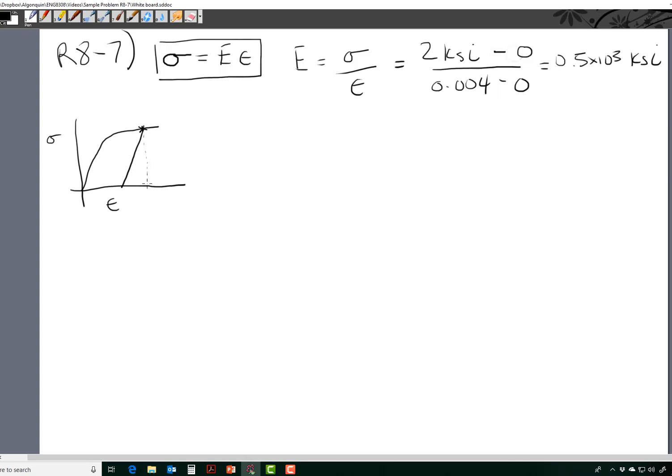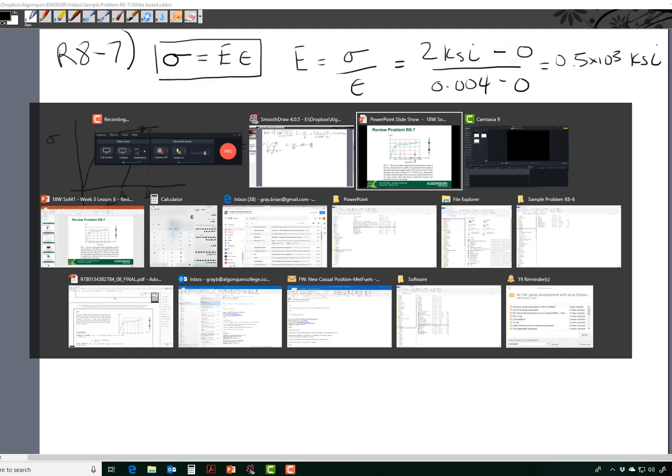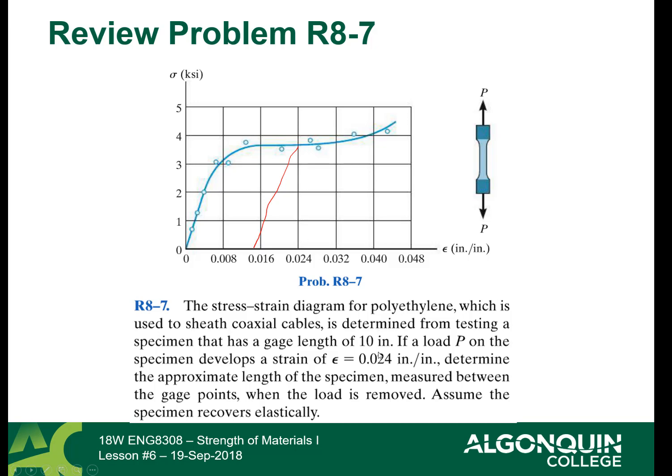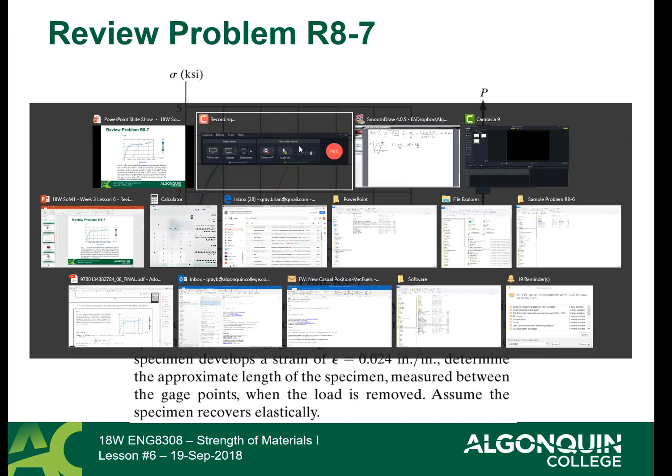So remember from the sample problem in class that this is E and if we go A, B, C, E is equal to CB, which is the rise, over AB. And what are we interested in? We're interested in the AB, which is this elastic response right here, so AB is equal to CB over E. And what was CB? So CB, if we go back to our question, it's around 0.024 inch when it's unloaded, so that's around 3.7 KSI applied stress, normal stress.